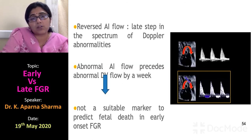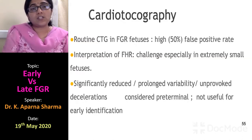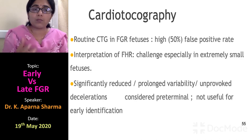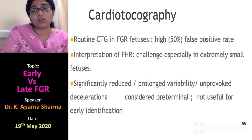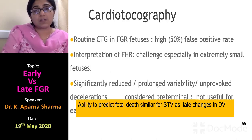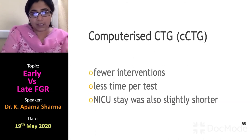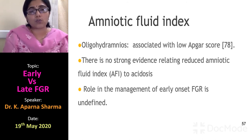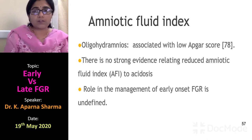The aortic isthmus Doppler is still evolving with not much role in practical day-to-day management. Reversed flow in the aortic isthmus is a late step in Doppler abnormalities and precedes abnormal DV flow by a week, but it is not a suitable marker to predict early fetal death. CTG in FGR has a high false positive rate, but when there is absent or reversed flow, it remains a very important daily monitoring tool. Significantly reduced or prolonged variability or unprovoked decelerations are considered pre-terminal. The ability to predict fetal death is similar for short-term variability as for late DV changes. Computerized CTG should be used if available. AFI is a useful marker; oligohydramnios is associated with low Apgar scores, and we need to assess the biophysical profile during day-to-day monitoring.